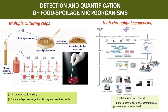However, the recent development of high-throughput sequencing has led to a deeper analysis of food microbial ecosystems. These approaches, mostly focused on 16S rRNA, have confirmed previous studies performed with classical culture methods about the nature of bacteria found in foods. In addition, data obtained by direct analysis of DNA extracted from food matrix have enabled a better description of the ecosystem at the genus or even species level.